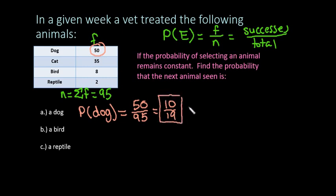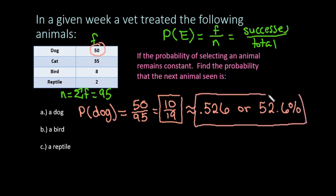Or sometimes they will say to round it to three decimal places or something like that. So we could put it as 0.526, or you could also express this as a percent. So it's really just a matter of preference. All three of these are acceptable answers for finding the probability.